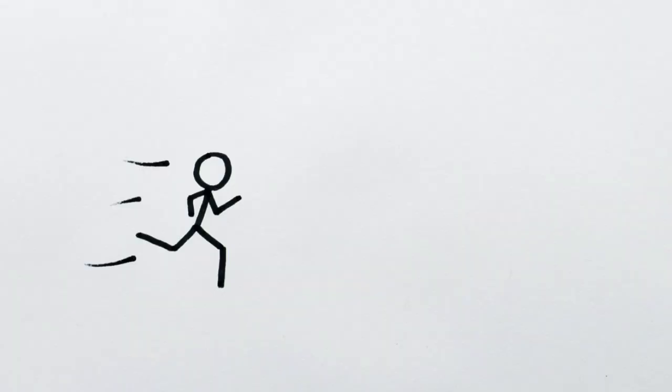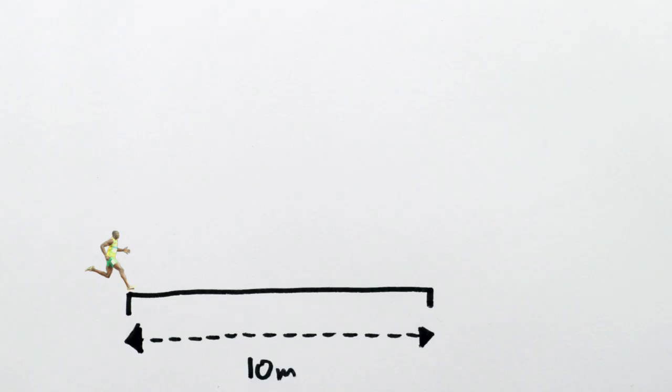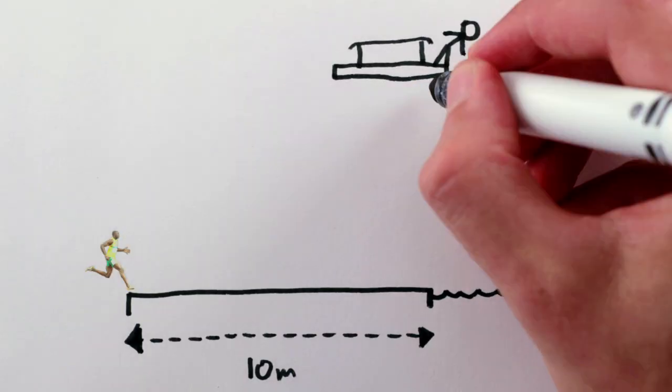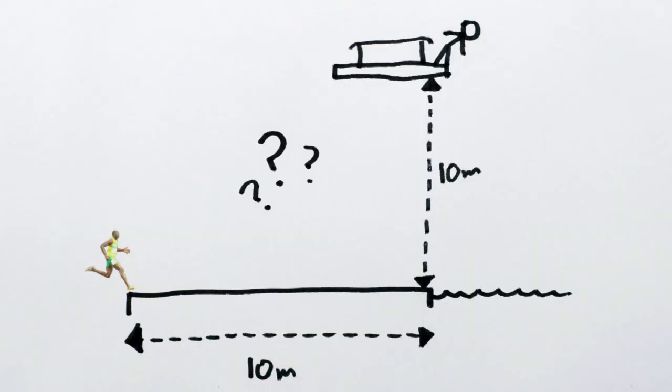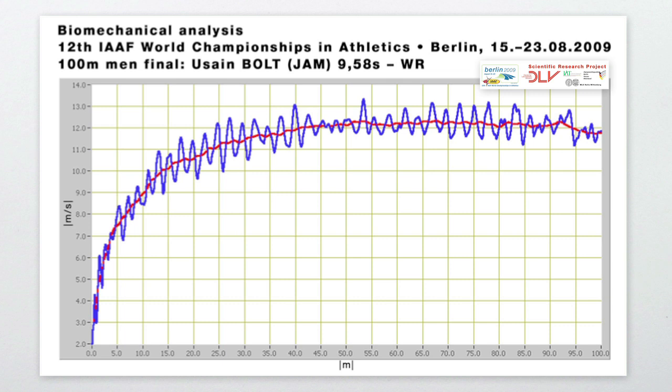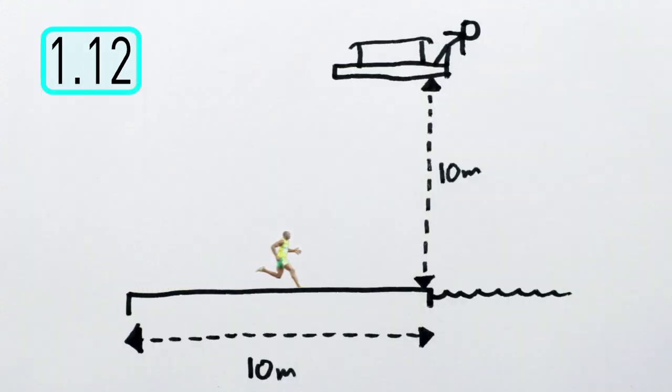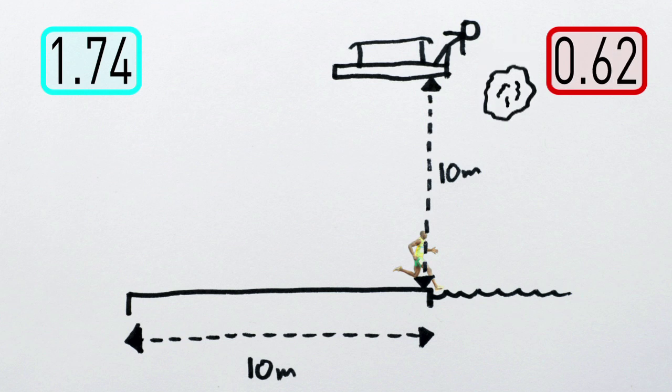But now suppose a world record sprinter races our Olympic diver. That is, Usain Bolt starts 10 meters from the finish line, and the diver starts 10 meters above it. Who gets there first? Well, Bolt's actual running time through the first 10 meters of his world record was 1.74 seconds, while a rock falling 10 meters takes only 1.43 seconds. So victory to the rock by a slim margin.